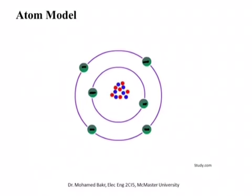If one of the electrons leaves this atom, it's going to leave behind a positive ion, and maybe another electron will come and fill that hole that was created. So these valence electrons in the outermost shell determine whether the material is a good conductor, an insulator, or a semiconductor. If these electrons are tightly connected to the nucleus they cannot move, so there are no electrons available for conduction and the material will behave as an insulator.